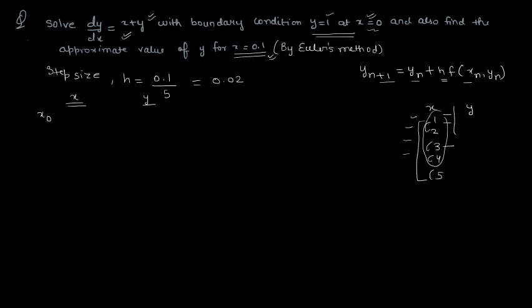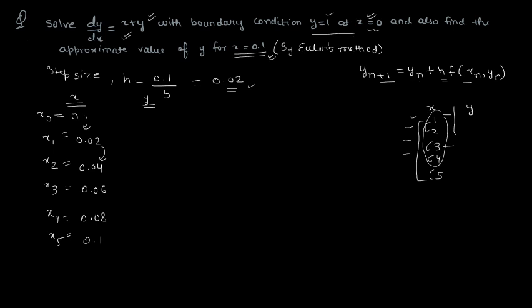Here you have values of x and here values of y. If x₀ = 0, then x₁ = 0.02, x₂ = 0.04, x₃ = 0.06, x₄ = 0.08, and x₅ = 0.1. So you need to find y₅. To do that, you need y₀, y₁, y₂, y₃, y₄. Since y₀ is already given — when x=0, y=1 — you need to find the rest.